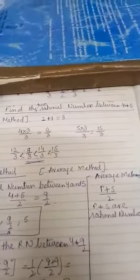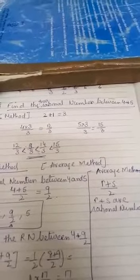This is the next question. Find the two rational numbers between 4 and 5.